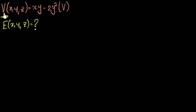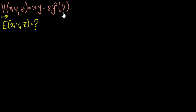Suppose we are given what the electric potential at every single point in space is, given by this function. This equation is basically saying: you put in the value of any coordinate you want, and it will tell you what the electric potential at that point is going to be in volts. Our goal is to figure out what the electric field vector is going to be at every point in space.